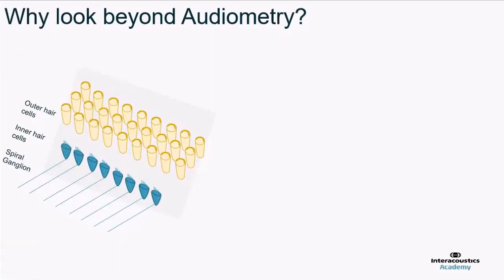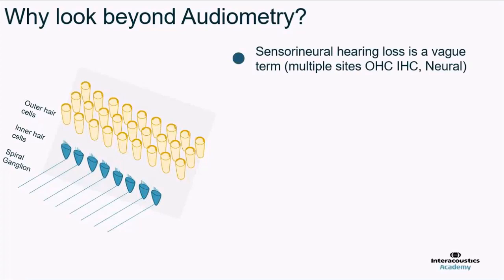So we could ask the question, why should we bother looking beyond audiometry? All you need to program a hearing aid, in theory, is an audiogram. Is there any need to do anything more? Well, if we think about audiometry, the first thing we can say is that it's very good at differentiating between conductive and sensorineural hearing losses. But actually, the term sensorineural hearing loss is vague.